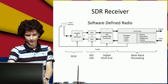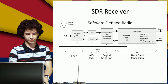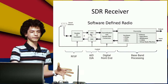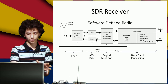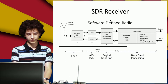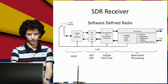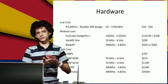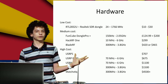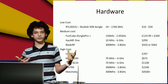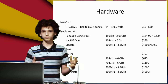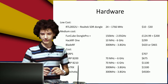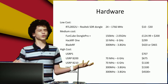Here is another block diagram of software defined radio — again antenna, RF hardware, an analog to digital converter, a digital to analog converter, and then pretty much everything after it is in software. As far as hardware goes there are all sorts of price ranges depending on how much you want to spend. The lowest cost one is the RTL, called the Realtek dongle, the RTL 2832U.